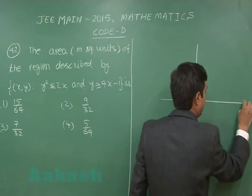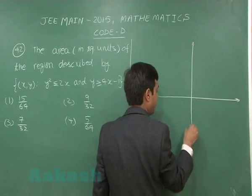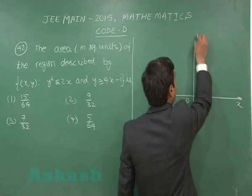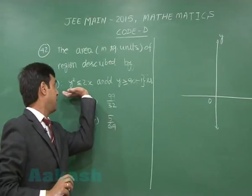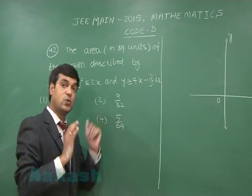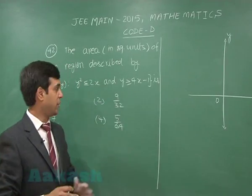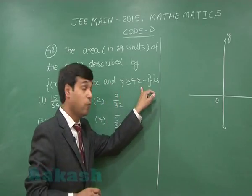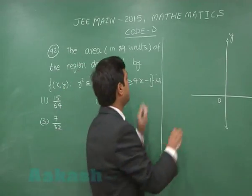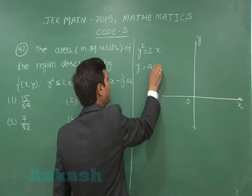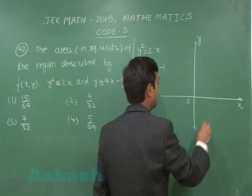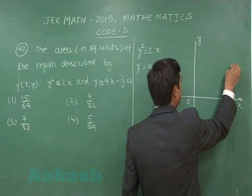First it is given there one parabola is given y² = 2x. Let us consider the strict equation first and a line y = 4x - 1. So y² = 2x and y = 4x - 1, right? We draw the parabola like this.